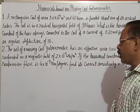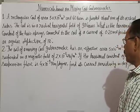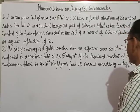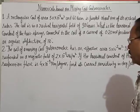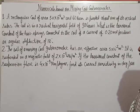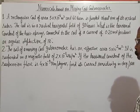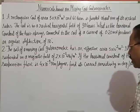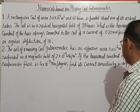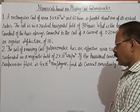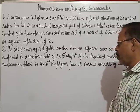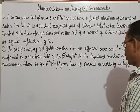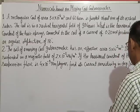Question number two: the coil of a moving coil galvanometer has an effective area of 5×10⁻² meter square. It is suspended in a magnetic field of 2×10⁻² weber per meter square. If the torsional constant of the suspension fiber is 4×10⁻⁹ newton meter per degree, find its current sensitivity in degree per microampere.